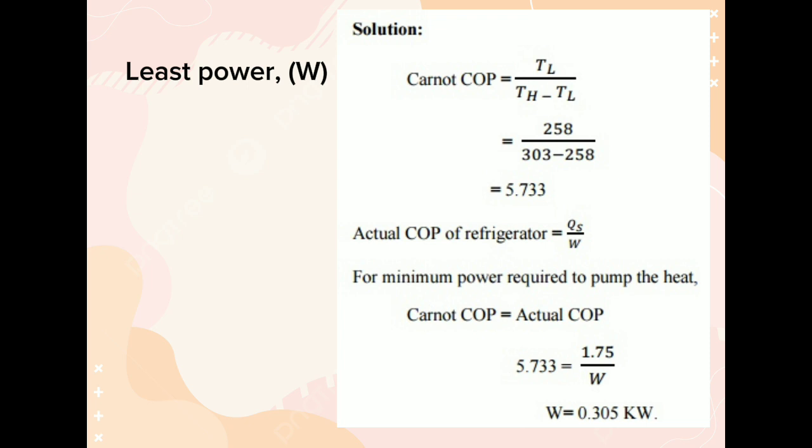Carnot COP is equal to TL over TH minus TL. So, substitute 258 over 303 minus 258 is equal to 5.733.